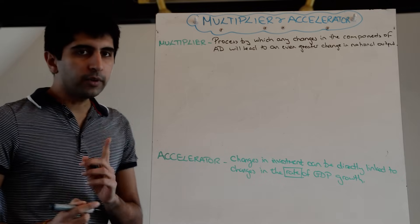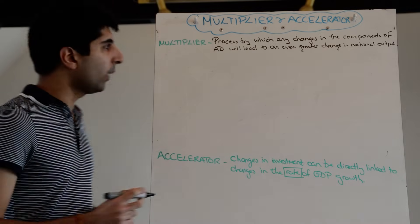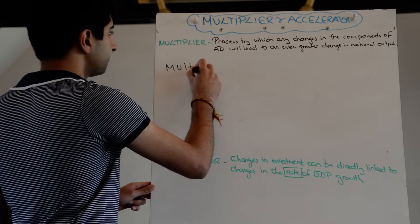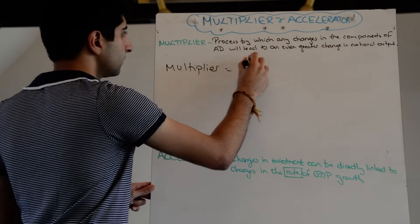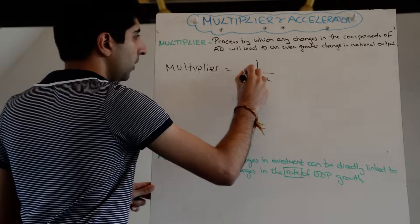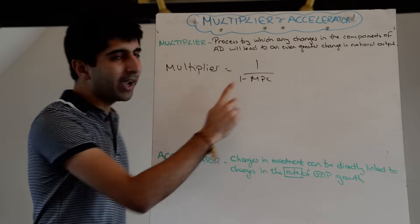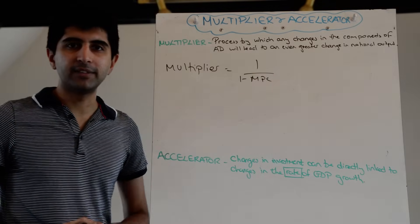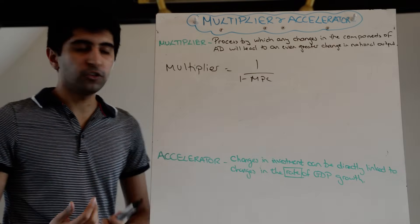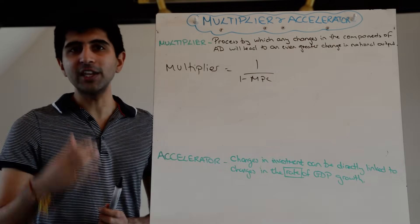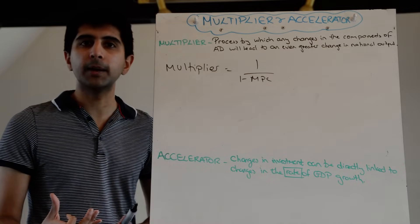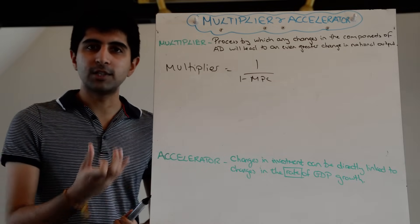We can always measure the multiplier as well. The equation for the multiplier is 1 over 1 minus the marginal propensity to consume. The marginal propensity to consume is very simply, out of each extra pound that's being generated in terms of income, how much is actually going to be spent?